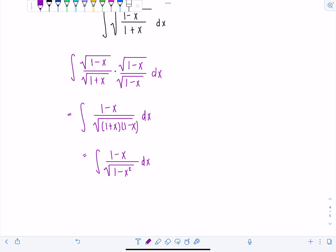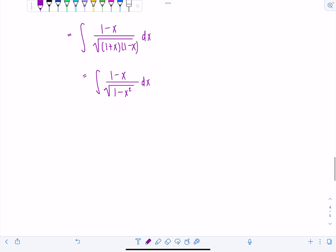Good. So now I can actually split this up into two integrals. We have here first integral one over radical one minus x squared dx. Start thinking you should recognize that one. Minus integral x over rad one minus x squared dx.